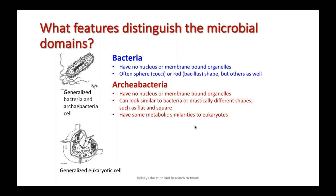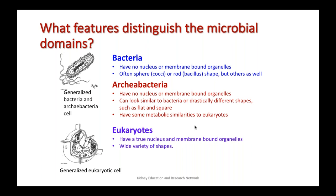Archaea also do not have any nucleus or membrane-bound organelles. They can look similar to bacteria or have drastically different shapes such as flat or square, but in addition to these similarities to prokaryotes, they can also have some metabolic similarities to eukaryotes. Eukaryotes actually have a true nucleus and multiple membrane-bound organelles like mitochondria, endoplasmic reticulum, and lysosomes, and they can assume a wide variety of shapes — a neuronal cell, a renal mesenchymal cell, or a blood cell are all very differently shaped.